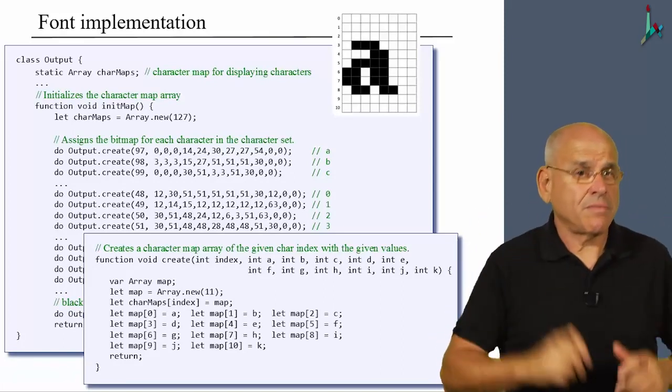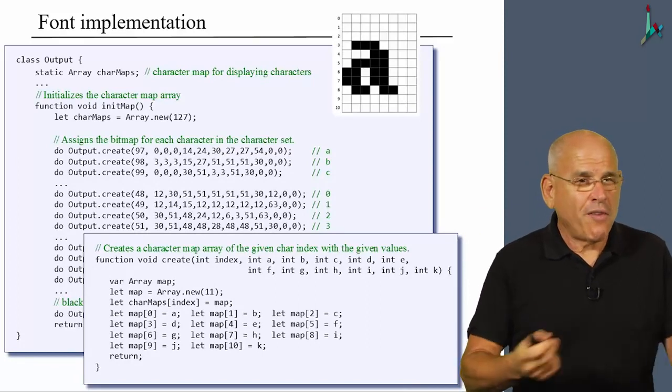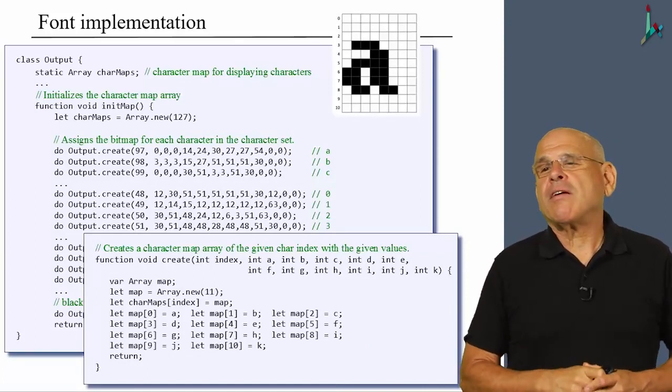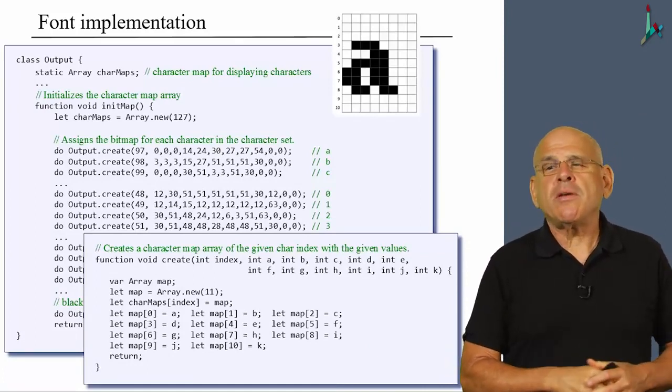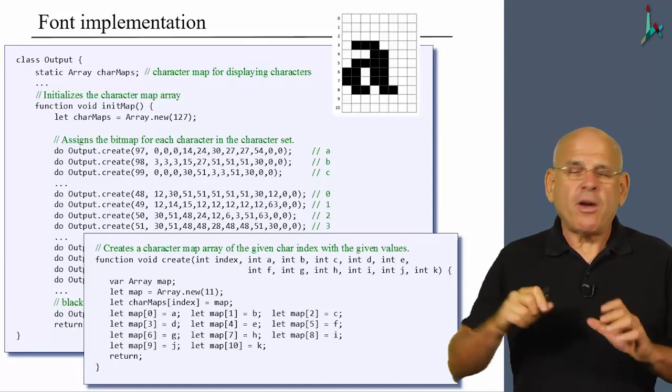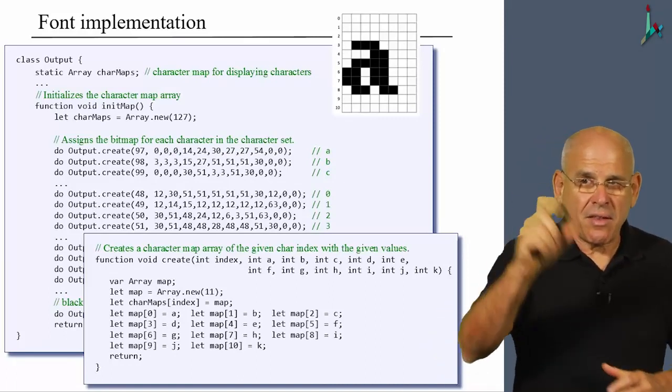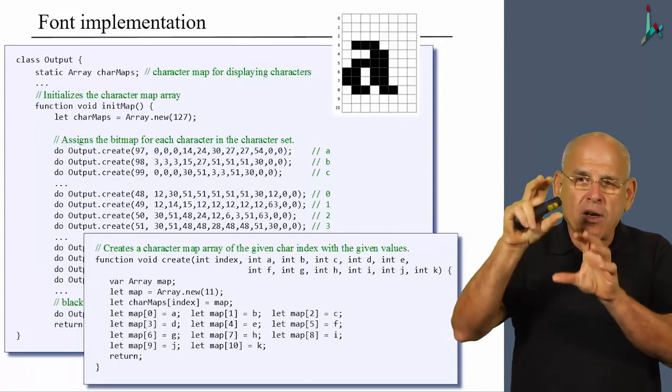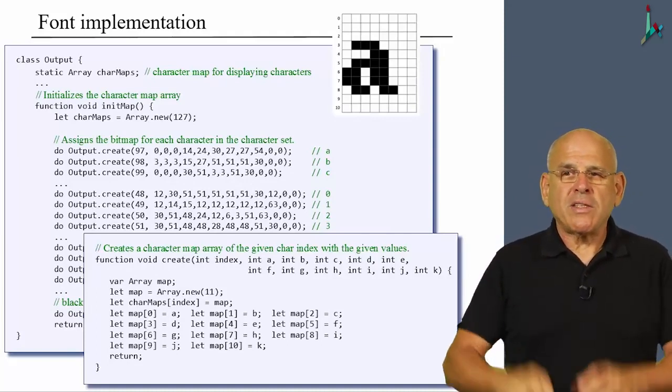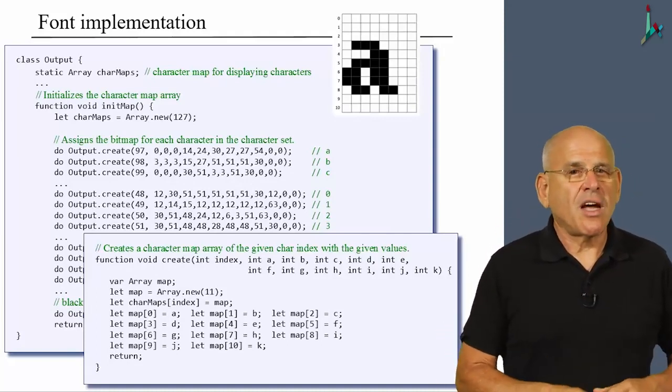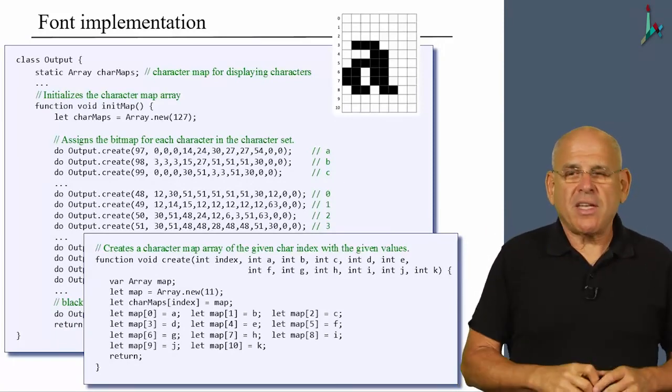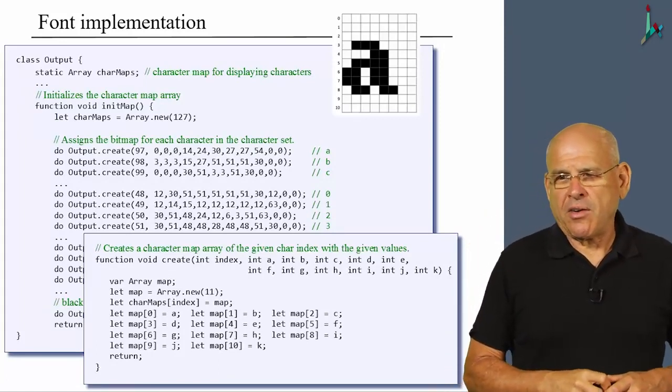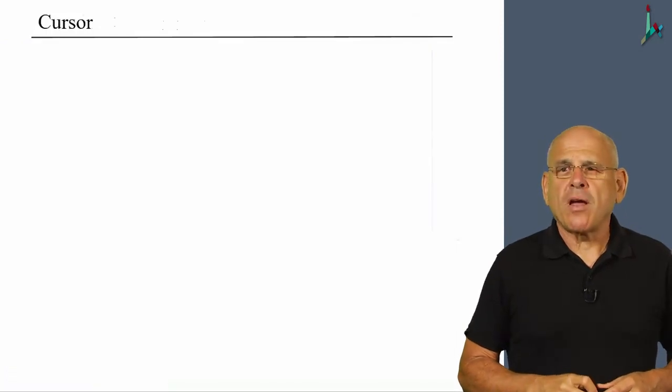And we do this 127 times for every character in the character set. And the good news is that we do it only once. We don't do it every time we have to draw a character. But when we turn on the computer, when we reset, we are going to also reset the operating system. And when the operating system will be reset, it will also reset this output class. And the output class will run an init method that will create this font. And once this font is created, we can start using it, using a few more methods that I haven't shown you, which are very well documented in your course materials.